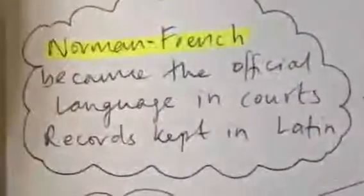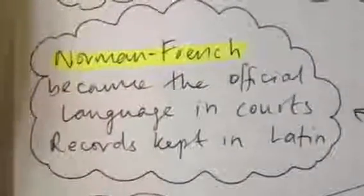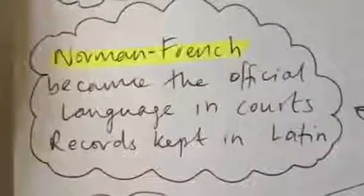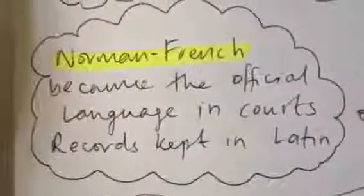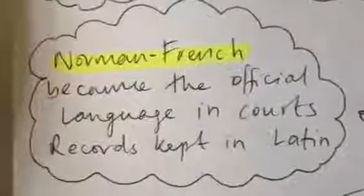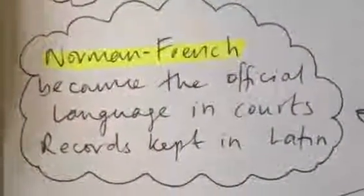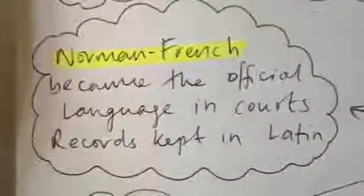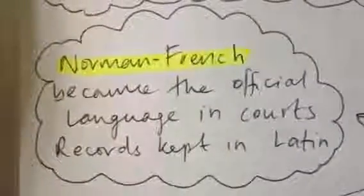They did change the language that was used, no surprise. They spoke Norman French, and they wanted that to be used in their courts. Records were kept in Latin. It's worth just noting that neither of these languages would make any sense to normal Anglo-Saxon people. So this is another form of control, in a sense. They are imposing their language on the people of England.